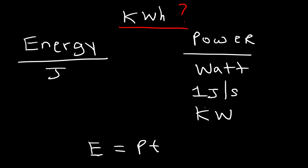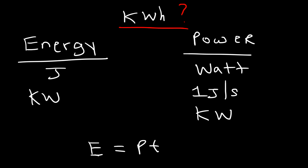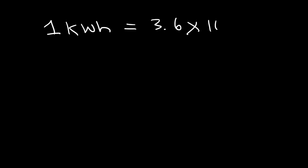Now if you take the unit kilowatts and multiply it by a unit of time like hours, you're going to get a unit of energy: kilowatts times hours. So anytime you take a unit of power and multiply it by a unit of time, that gives you a unit of energy. A kilowatt hour is a unit of energy, just as joules is a unit of energy. In fact, one kilowatt hour is equivalent to 3.6×10⁶ joules.